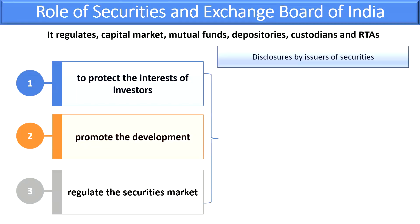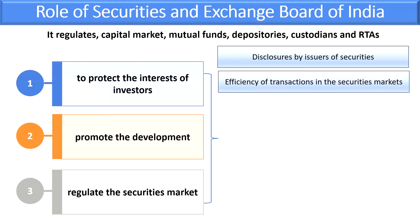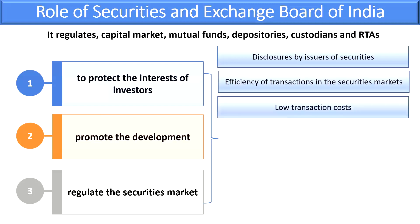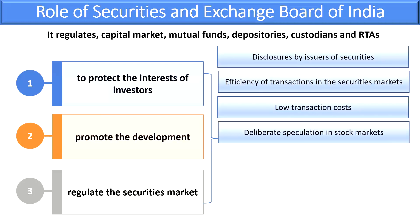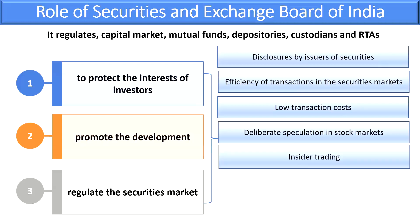Their basic function is disclosure by issuers of securities — in terms of equity, debt, and money market instruments — norms are set so investors are informed. Then, efficiency of transactions in the securities market — investors should be able to transact as fast as possible at the lowest transaction cost, so that the capital market automatically develops. Simultaneously, they prevent deliberate speculation in the stock market, insider trading, price rigging — SEBI will definitely prohibit all such things.